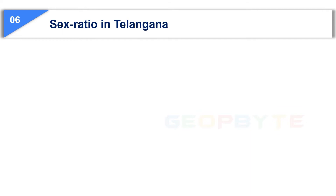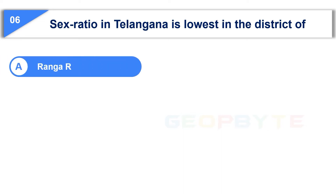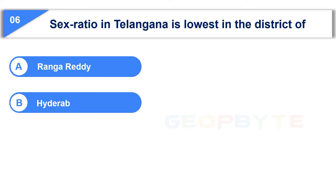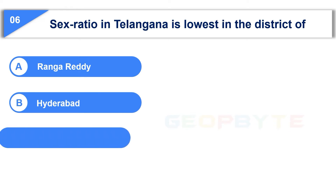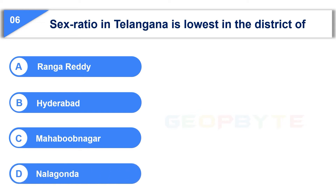The sixth question is: the sex ratio in Telangana is lowest in the district of — Option A: Rangareddy, Option B: Hyderabad, Option C: Mahbubnagar, Option D: Nalgonda.